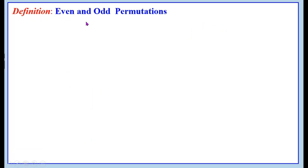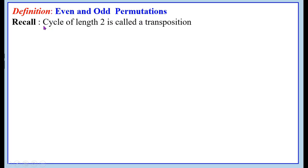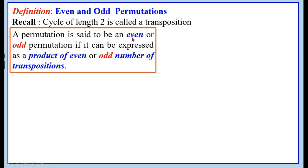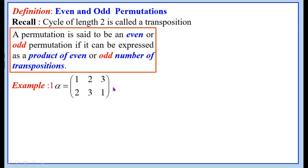Definition of even and odd permutations: a cycle of length 2 is called a transposition. A permutation is said to be an even or odd permutation if it can be expressed as a product of an even or odd number of transpositions. For example, alpha equals the permutation with top row 1, 2, 3 and bottom row 2, 3, 1. We are going to write this as a product of transpositions. When we say transposition, it must be a cycle of length 2. It is clear that 1→2, 2→3, 3→1, so this is the cycle (1, 2, 3). But this is not a transposition — it is a cycle of length 3, so it should be written as a product of transpositions.